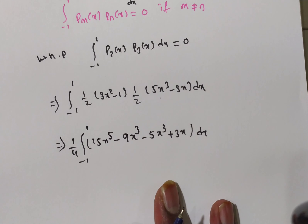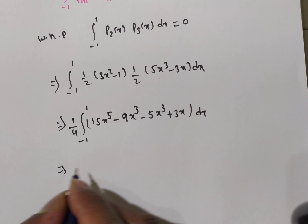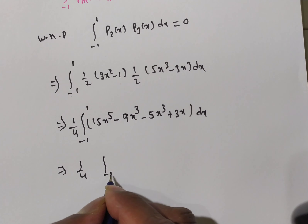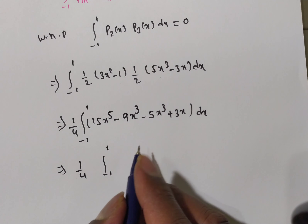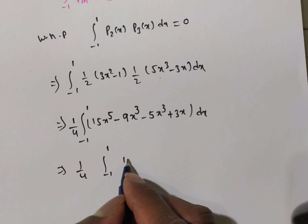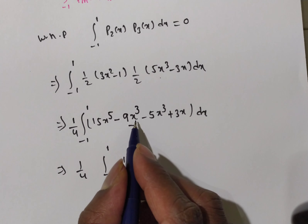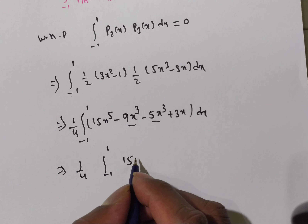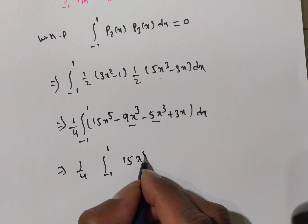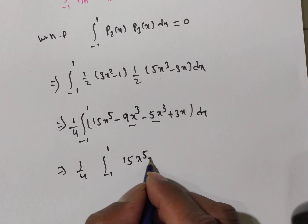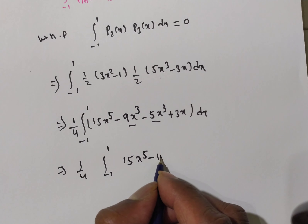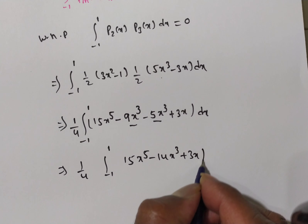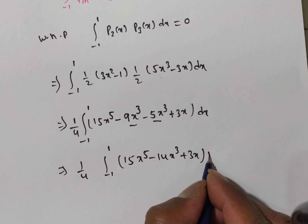This is equivalent to (1/4) times the integral from minus 1 to 1. We can simplify by combining the X cubed terms: 15X to the power 5 minus 14X cubed plus 3X, all times dx.